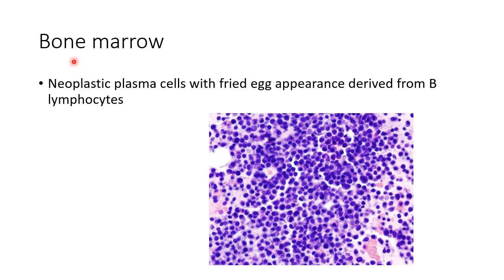Now let us see about the bone marrow findings in multiple myeloma. Bone marrow biopsy will reveal neoplastic plasma cells with fried egg appearance, which are derived from B lymphocytes. This picture shows the neoplastic plasma cells derived from B lymphocytes and they have a fried egg appearance in bone marrow biopsy.